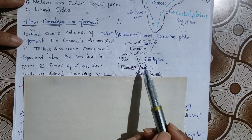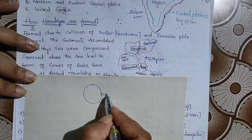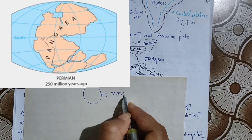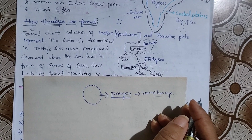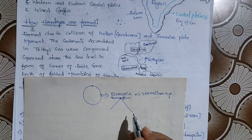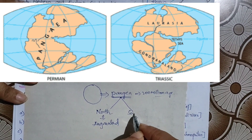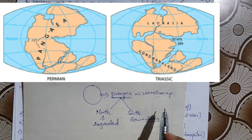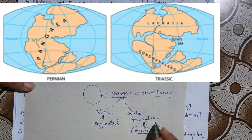First, we need to know that the entire globe was originally one single landmass. As you can see in the picture, this single landmass is called Pangea. About 200 million years ago, Pangea began to break apart, splitting mainly into two things: the northernmost part is called Angara Land, and the southernmost part is called Gondwana Land. India is a part of Gondwana Land - this is an important fact frequently asked in exams.